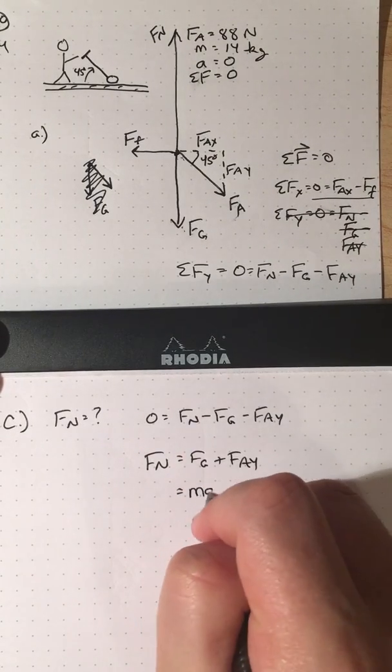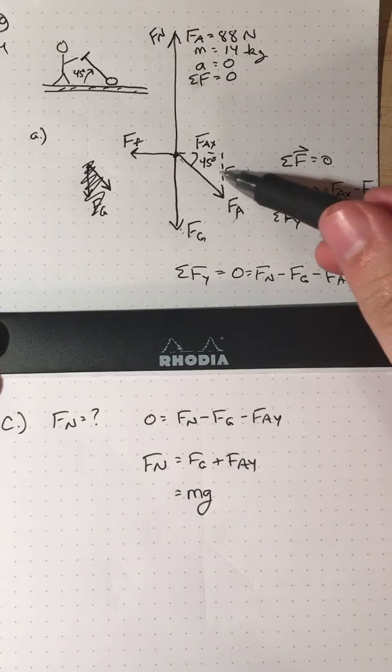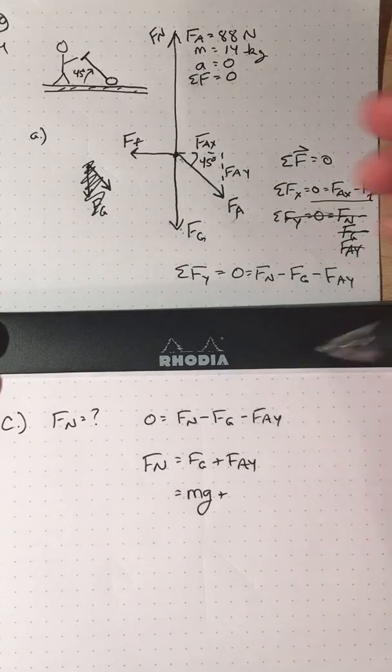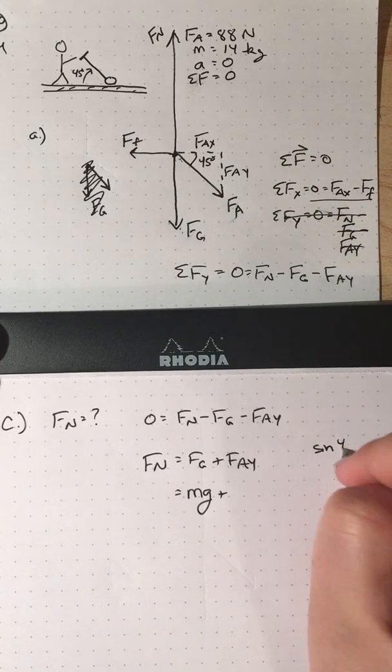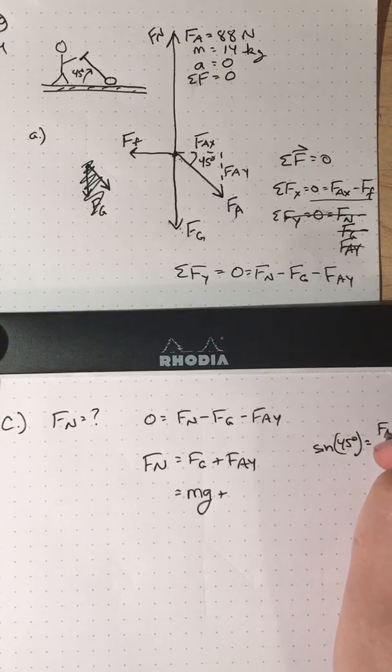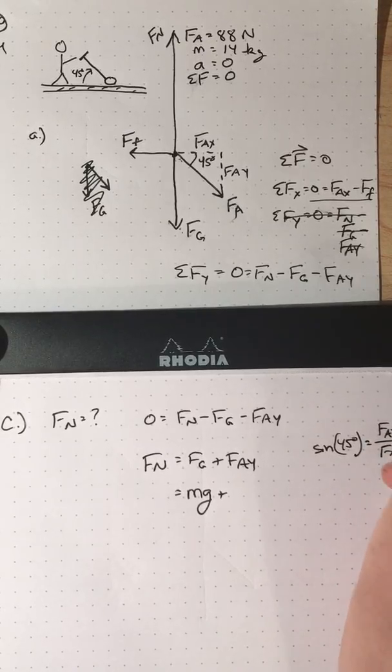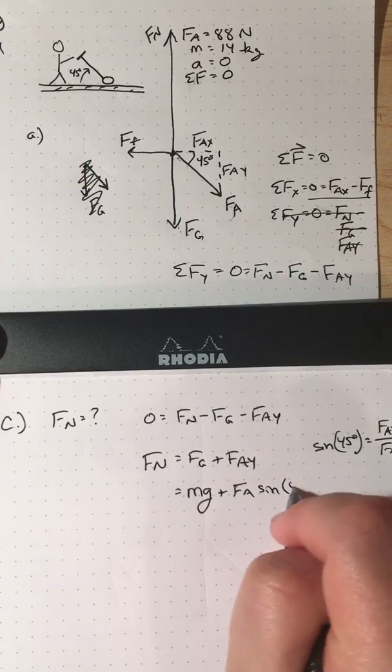We know that gravity equals mass times gravity. If we set up an equation for F_A_Y, we see we're using that the sine of 45 degrees should equal F_A_Y, the opposite, divided by the hypotenuse F_A. So this should be F_A times the sine of 45 degrees.